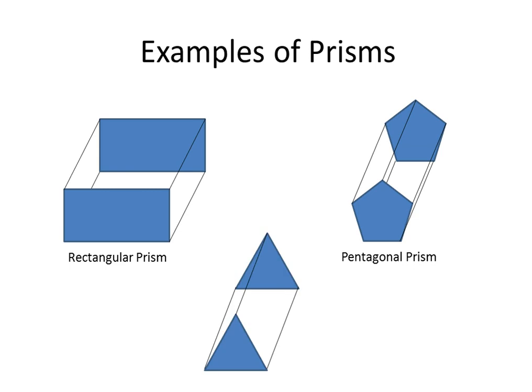Next, we have this prism, and the two bases that form this prism are triangles. And so we would call this prism a triangular prism.